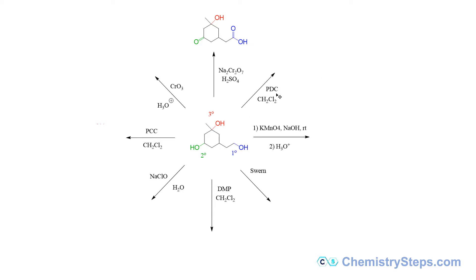Next we have the PDC, so pyridinium dichlorochromate, and these are used to convert selectively if you have a primary alcohol and you're going to oxidize it into an aldehyde without going all the way to carboxylic acids. That's where you would use it.